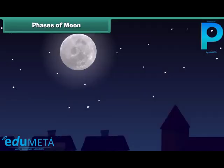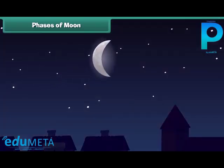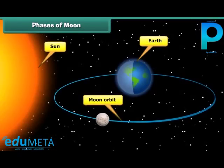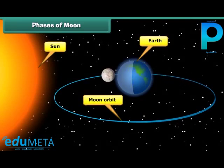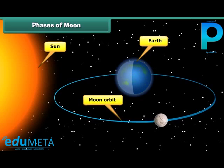You must have noticed that the moon does not always appear as a perfect circle. That's because it goes through phases. The changing shape of the bright part of the moon that we see is called its phase. Sunlight strikes the moon at different angles throughout its journey around the earth. The part of the moon facing the Sun is lit, whereas the part facing away from the Sun is in darkness.